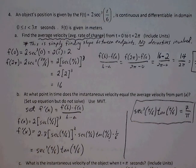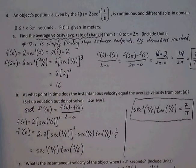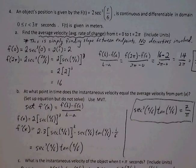This is the second page of the trig unit test review 1. Number 4, an object's position is given by 2 secant cubed, t over 6, is continuous and differentiable in the domain between 0 and 3 pi.